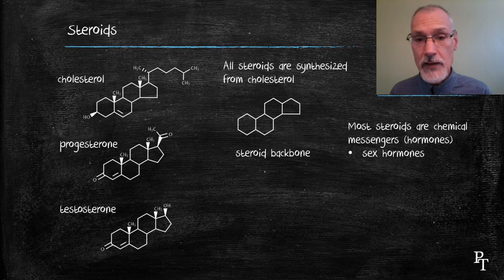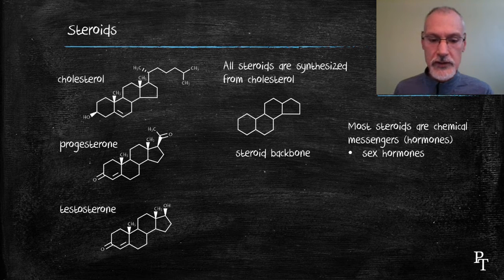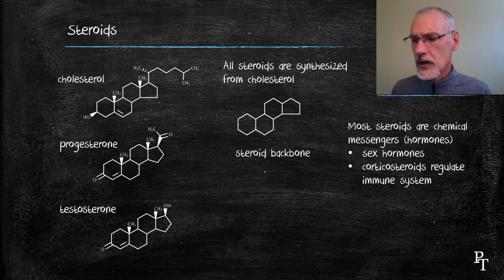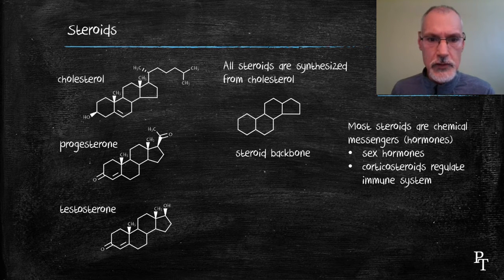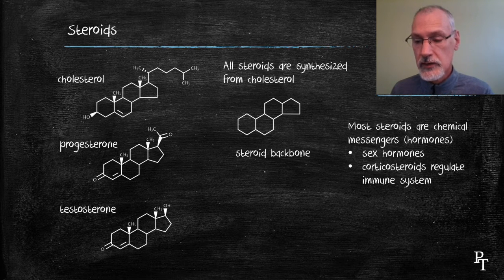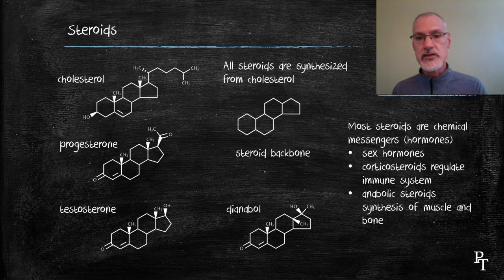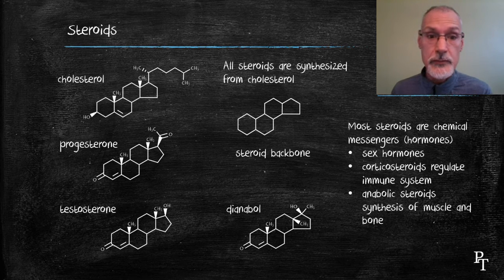They do differ, however, at one end of the molecule — in testosterone we have an alcohol group, and in progesterone we have a ketone group. You might have heard of corticosteroids, which are used to stimulate our immune system — prednisone being one of those. And of course, anabolic steroids are used in anabolism to help build up muscle and bone tissue, and their abuse is well noted in the media.